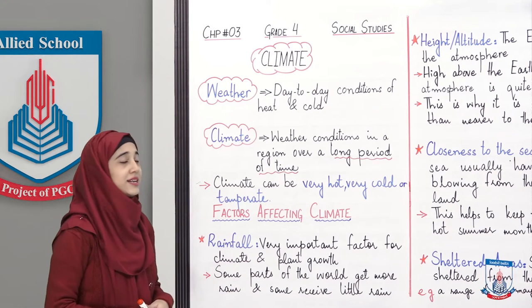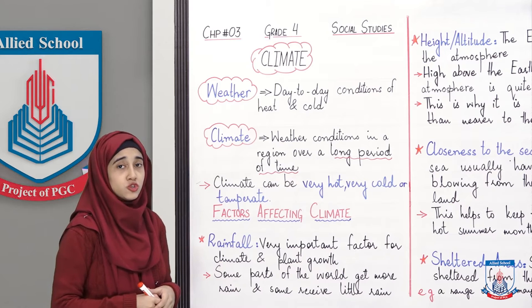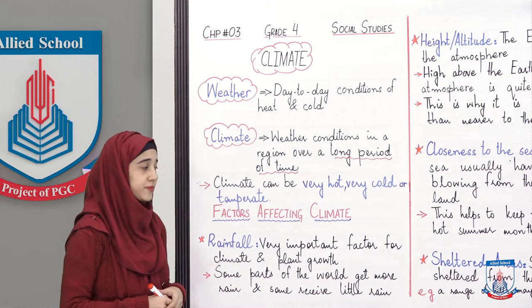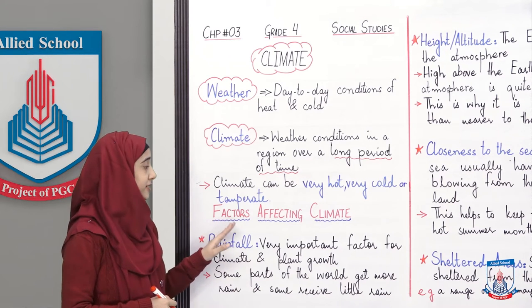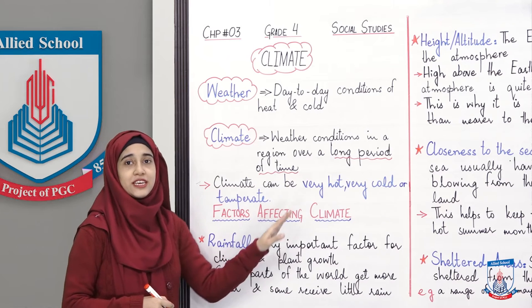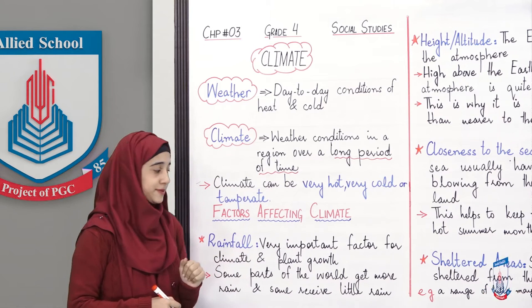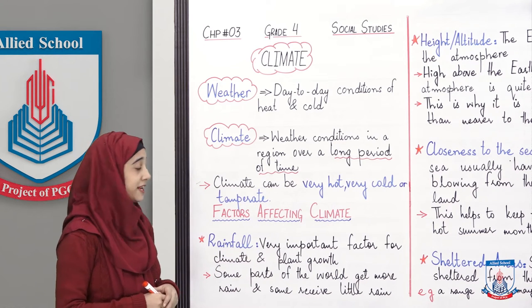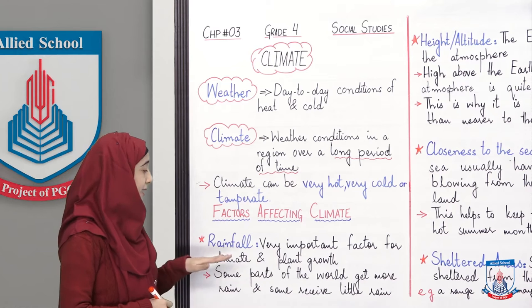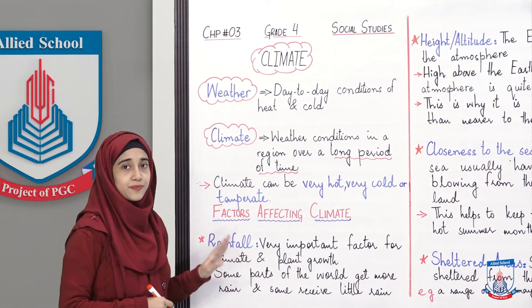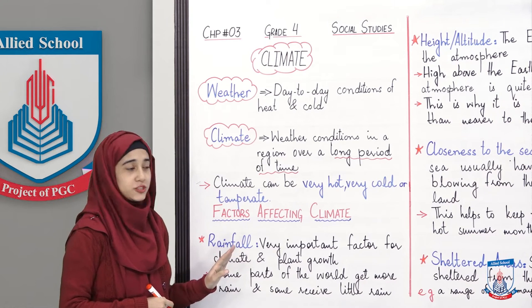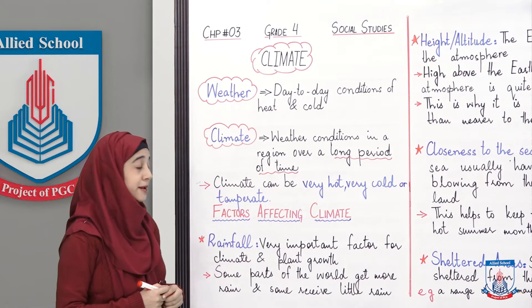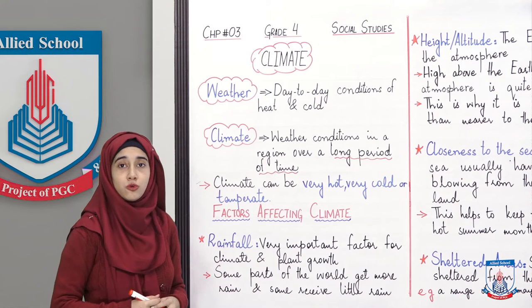اب ہم بات کر لیتے ہیں ان factors کی جو climate پر اثر ڈالتے ہیں. So let's talk about factors affecting climate. ہمارے پاس پہلا factor کیا ہے؟ پہلا factor ہے rainfall — بارش. Very important factor for climate and plant growth.